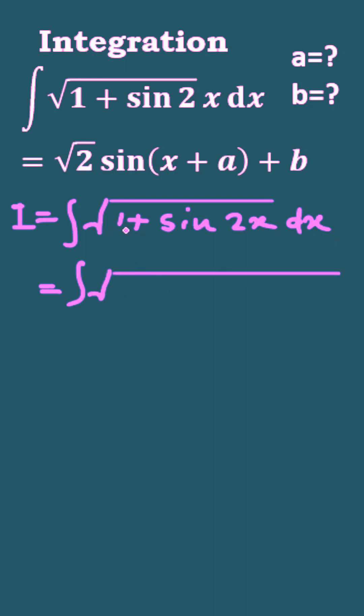So you can write 1 as sin square x plus cos square x and 2 sin x cos x for sin 2x.